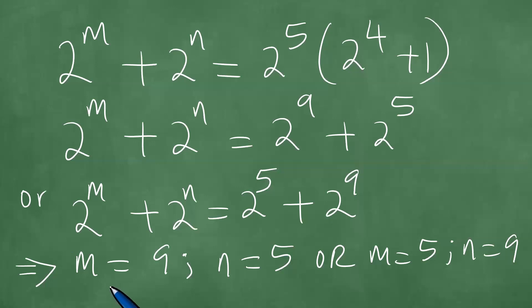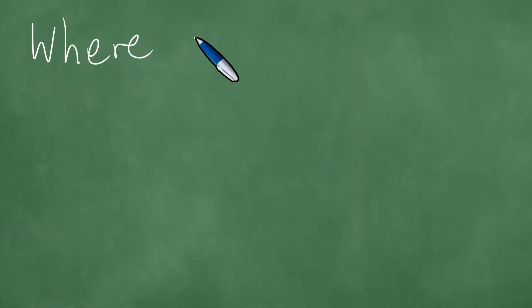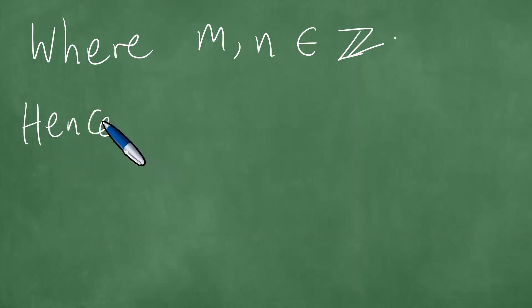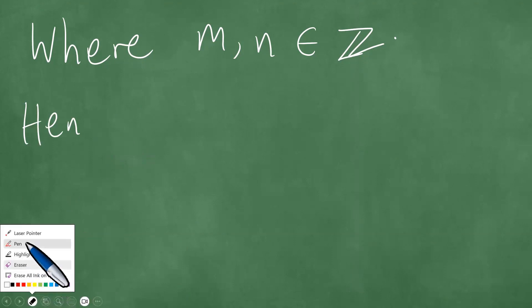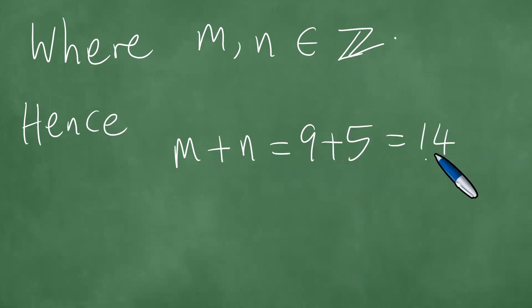So what do we do with this? In both cases, where M and N are integers, we are able to achieve the summation. M plus N is 9 plus 5, which is equal to 14.